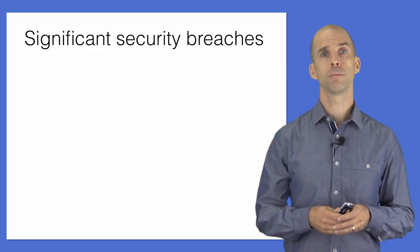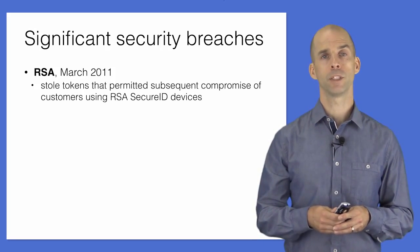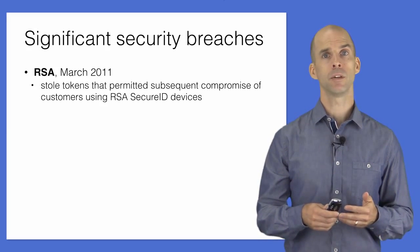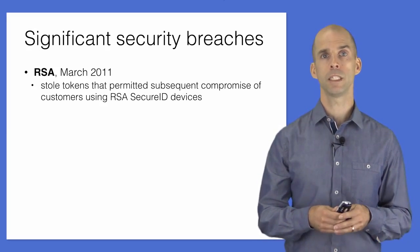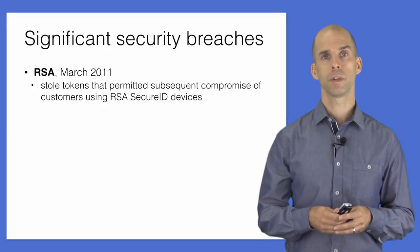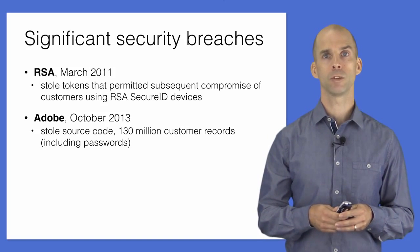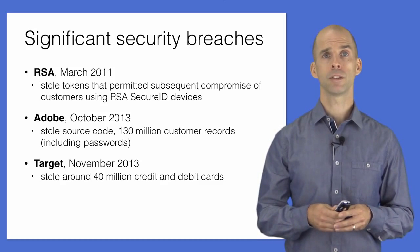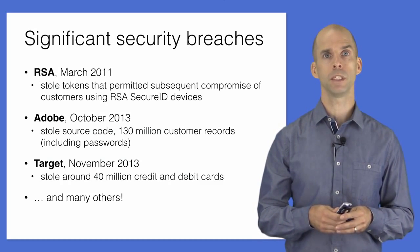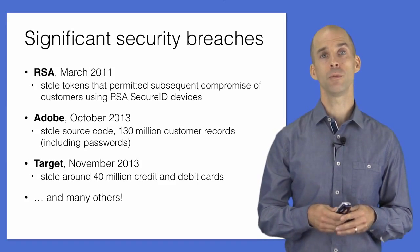Few systems today are completely secure, as evidenced by the constant stream of reported security breaches in the news. In 2011, RSA Corporation was breached, and the adversary stole sensitive tokens related to RSA's Secure ID devices, which were then used to break into companies that use Secure ID. In late 2013, Adobe Corporation was breached and both source code and customer records were stolen. Around the same time, attackers compromised Target's point-of-sale terminals and stole around 40 million credit and debit card numbers.